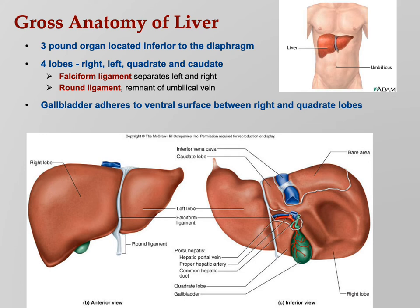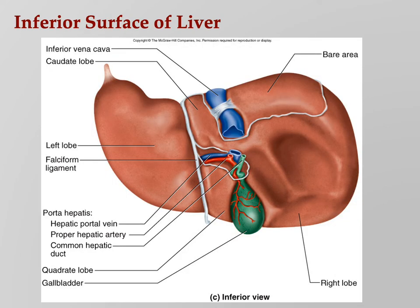The other two lobes besides right and left are caudate and quadrate. The way I remember is that the quadrate lobe is next to the gallbladder — they both have an R in them, caudate doesn't. Nice anatomy slide for the liver showing all the good stuff.